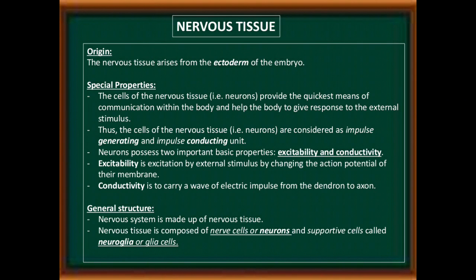Good morning students. Today we start the last animal tissue, that is nervous tissue. Its origin: the nervous tissue arises from the ectoderm of the embryo. A special property of the cells of the nervous tissue, that is neurons, is that they provide the quickest means of communication within the body and help the body to give response to external stimuli. Thus, the cells of the nervous tissue that is neurons are considered as impulse-generating and impulse-conducting units.